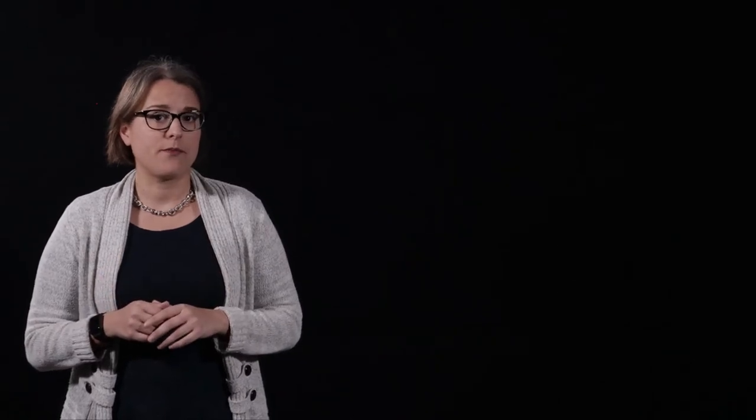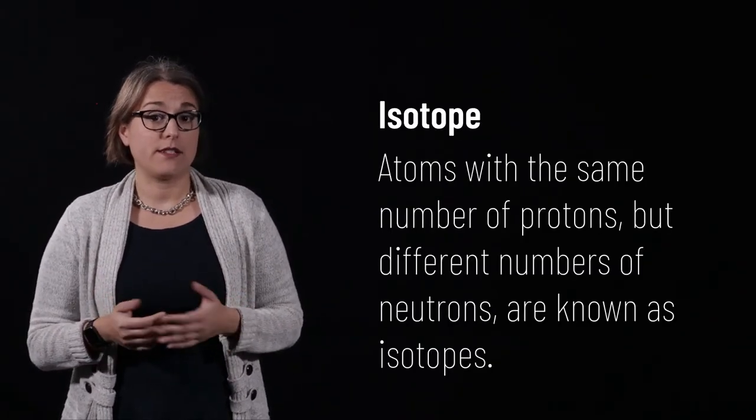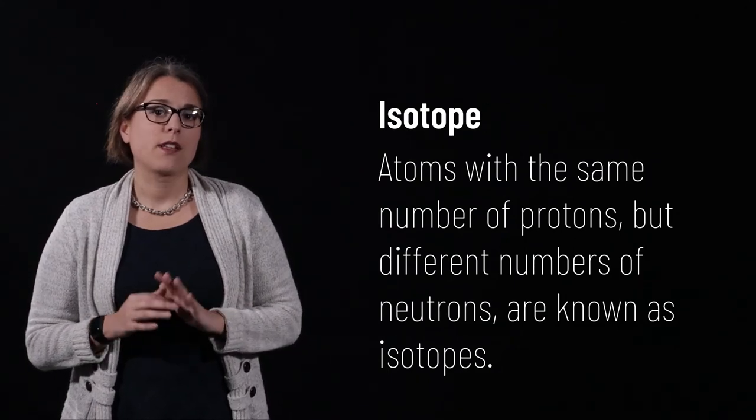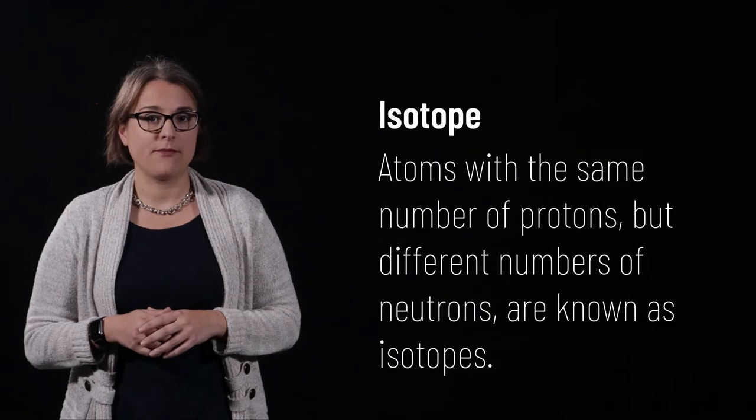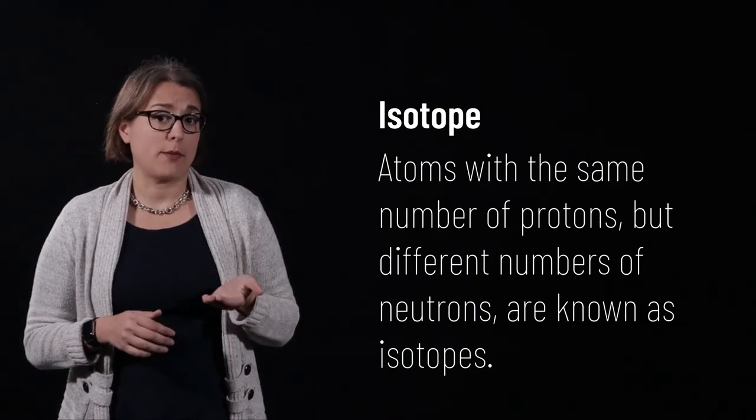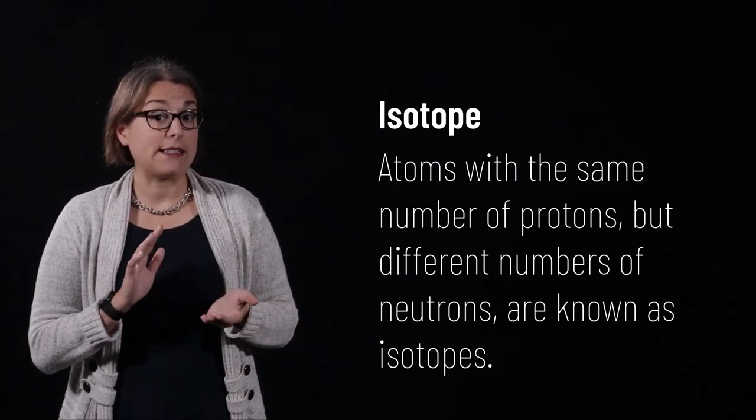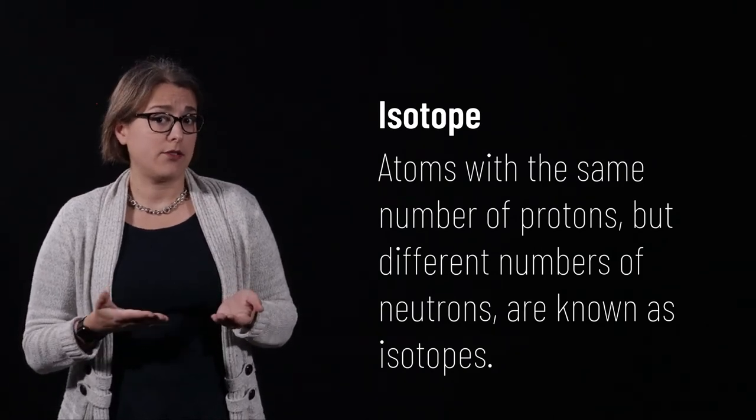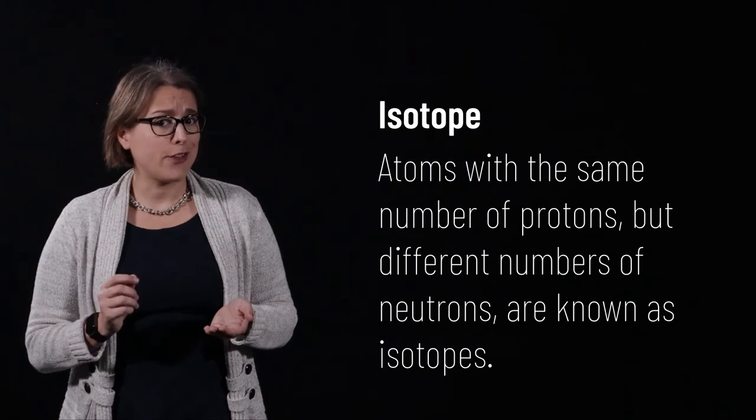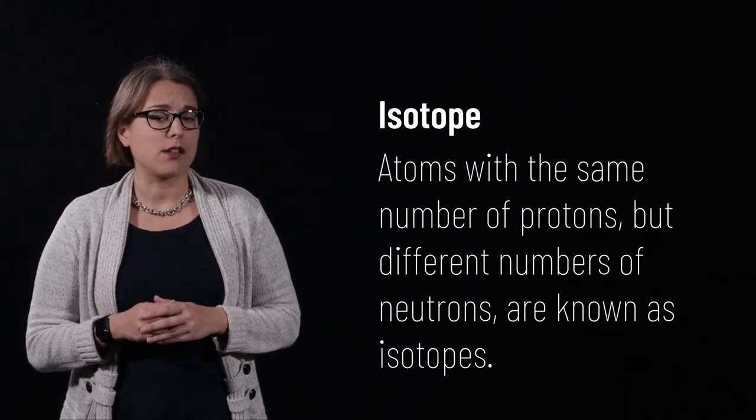Before we talk about the next property given on the periodic table, let's discuss isotopes. As mentioned, an element is defined by the number of protons in the nucleus. Let's say I have an atom with six protons. That element is carbon. Maybe I have a handful of carbon atoms. Each one of them has six protons. Most of these carbon atoms also have six neutrons, but some have seven neutrons, and a few may even have eight neutrons.